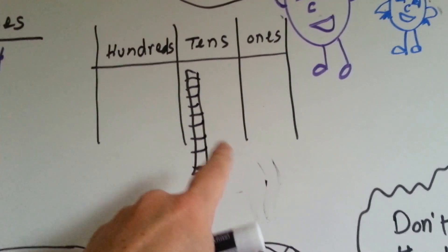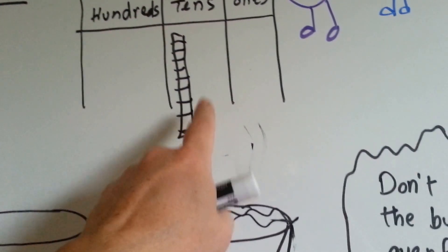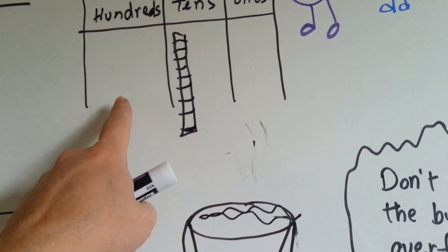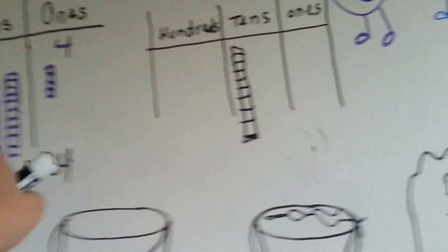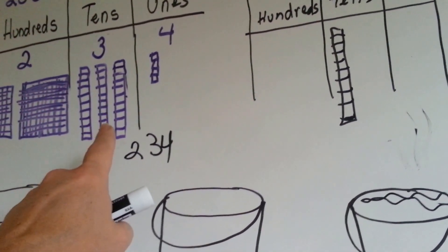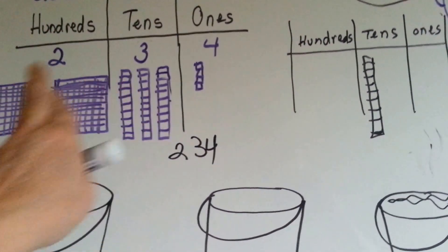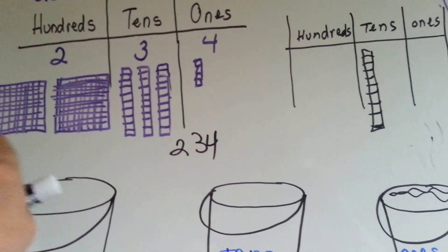Same thing happens if you got 9 tens. If you added another 10, it wouldn't be able to fit here. It would have to go into the hundreds place and you would have 1 box of 100. If you got 9 of these, that's okay. But the minute you add a 10th bar to the tens place, it becomes 100. Because there's 10 bars here in each box.